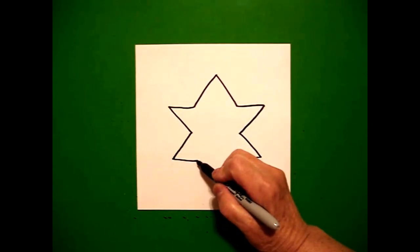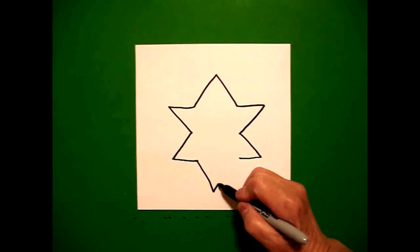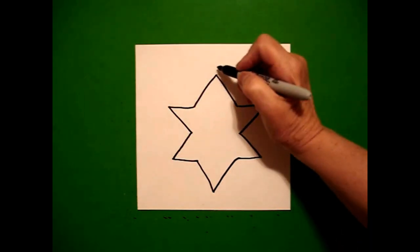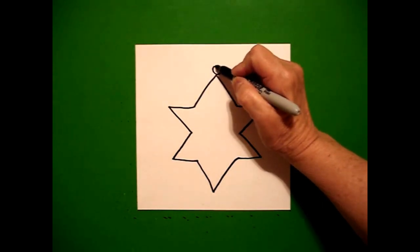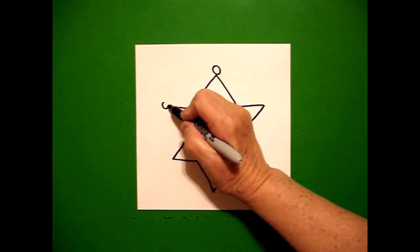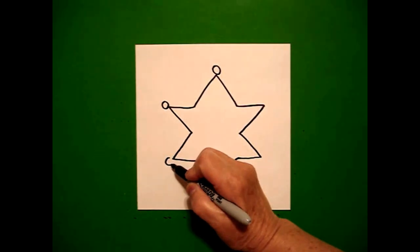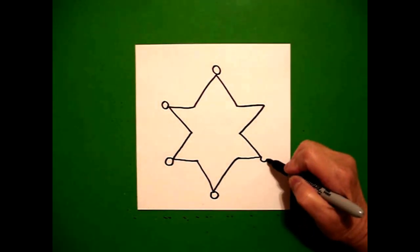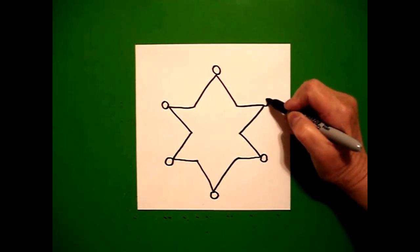Come back to the left, draw a straight diagonal down, straight diagonal up, connect. On each point, I'm going to draw a baby circle, keep going all the way around at each point of my drawing.